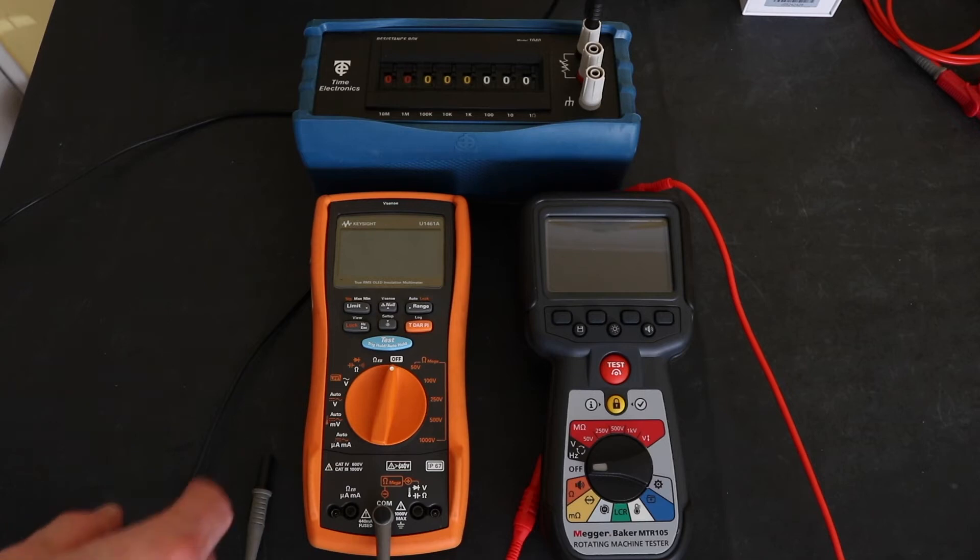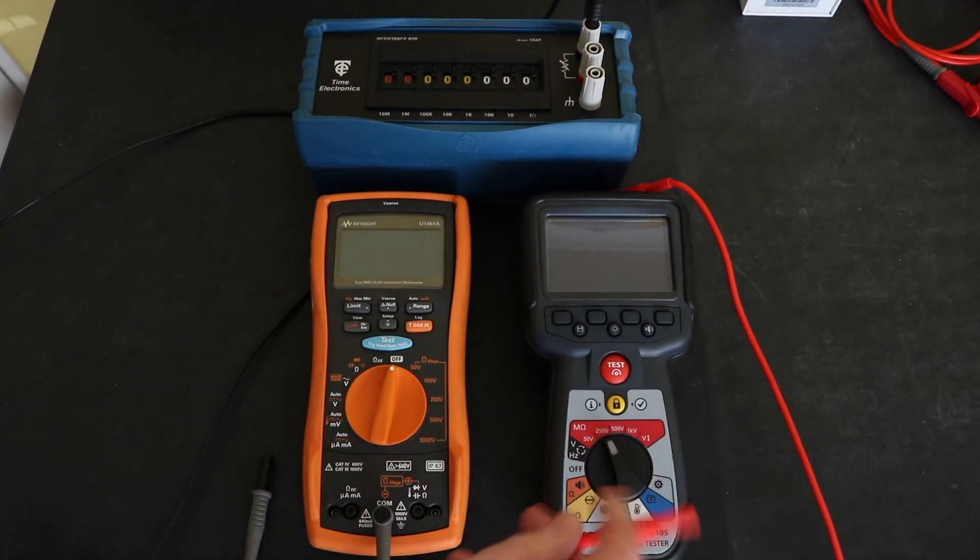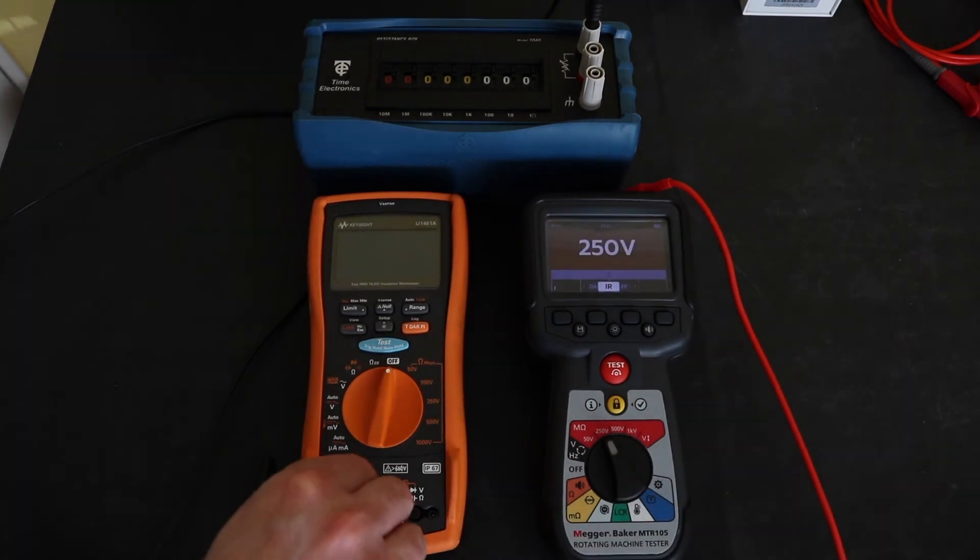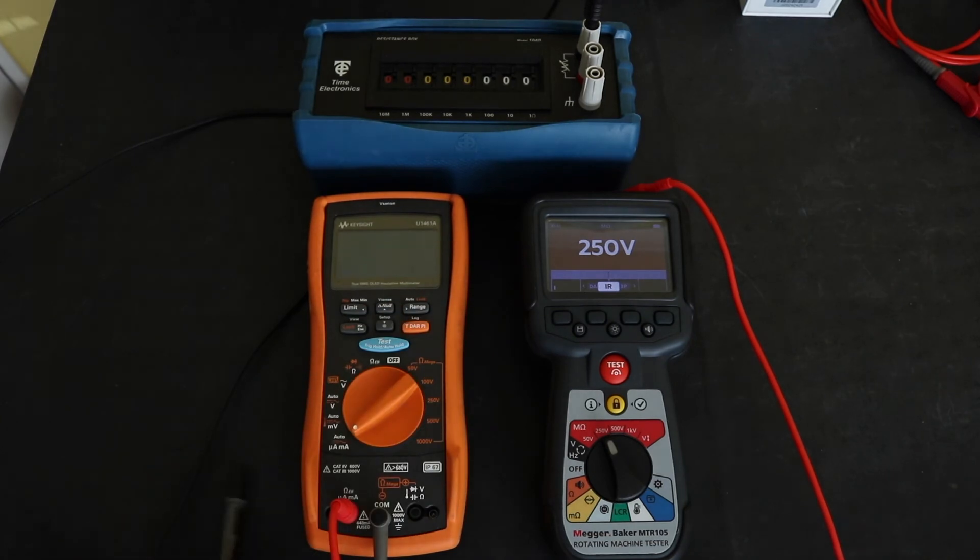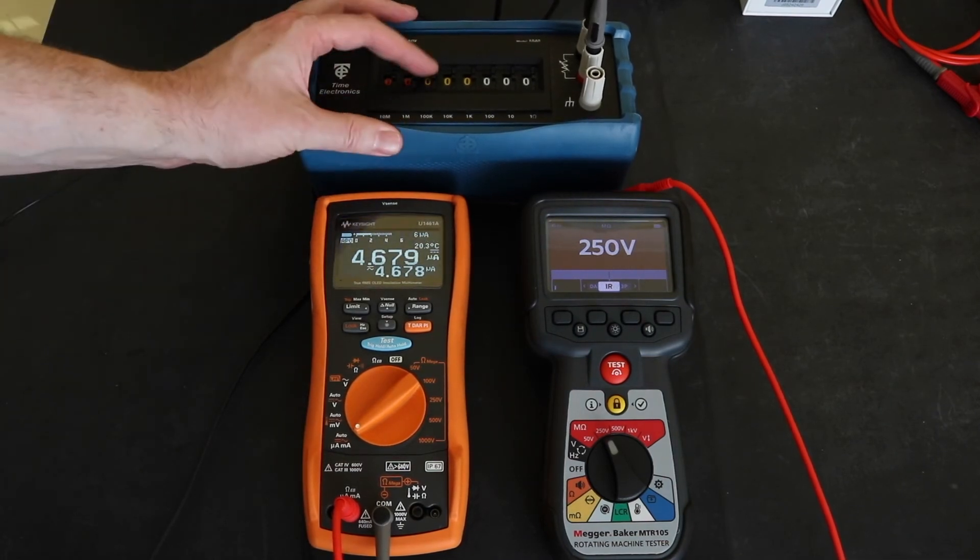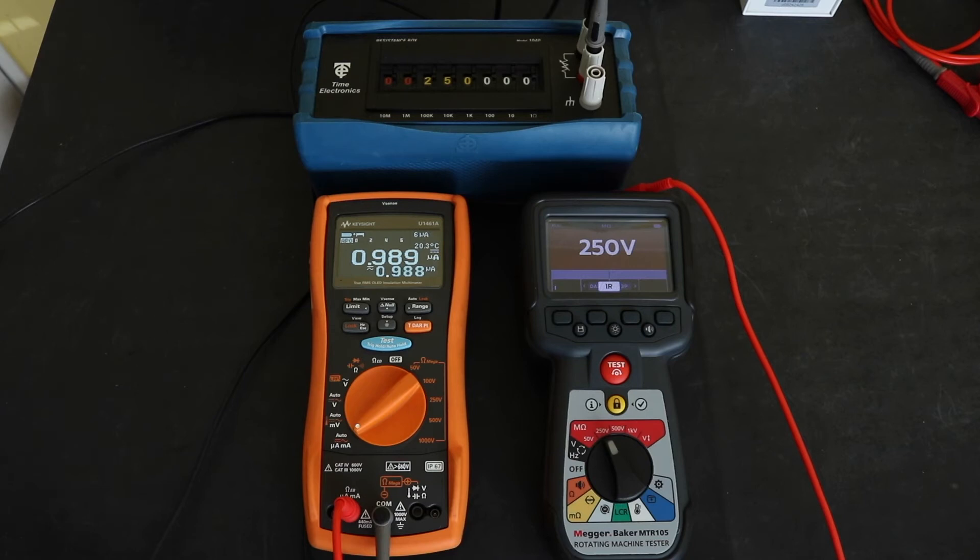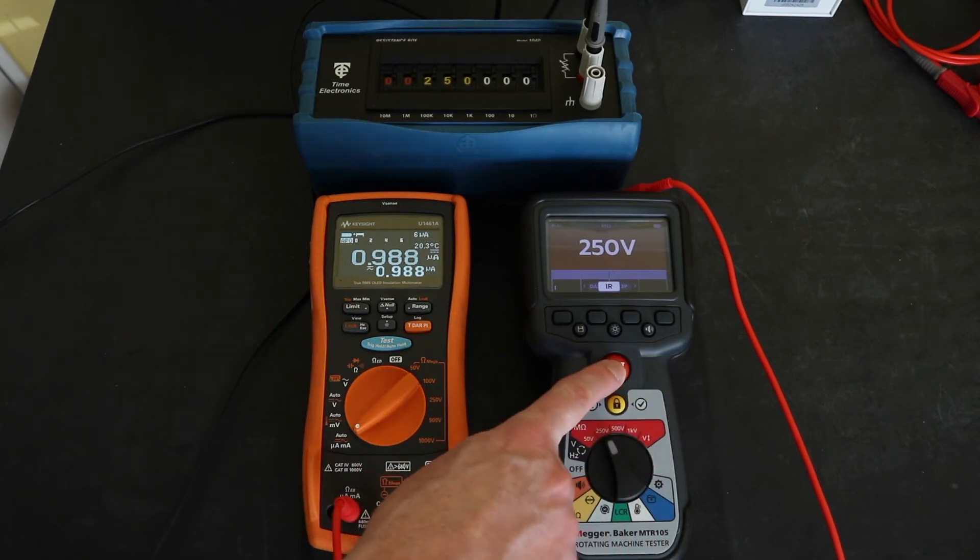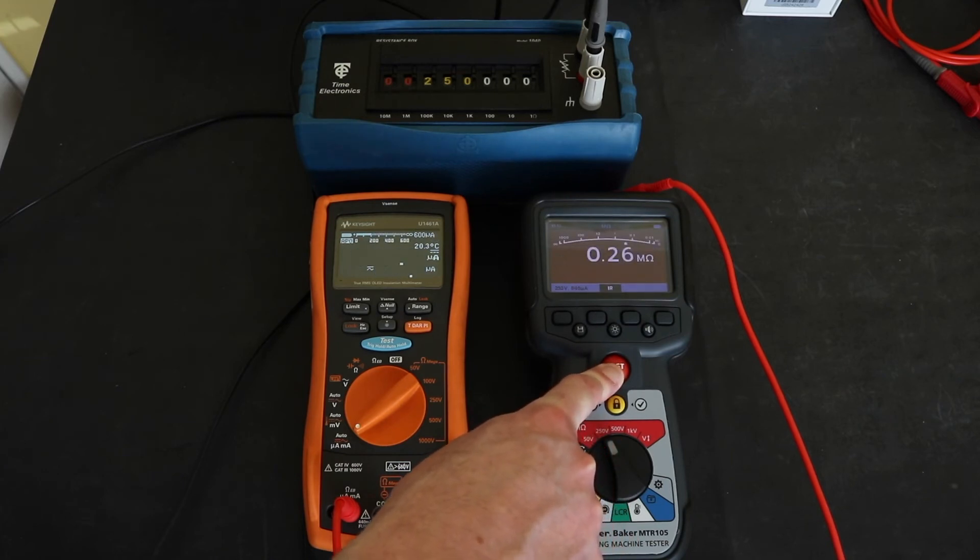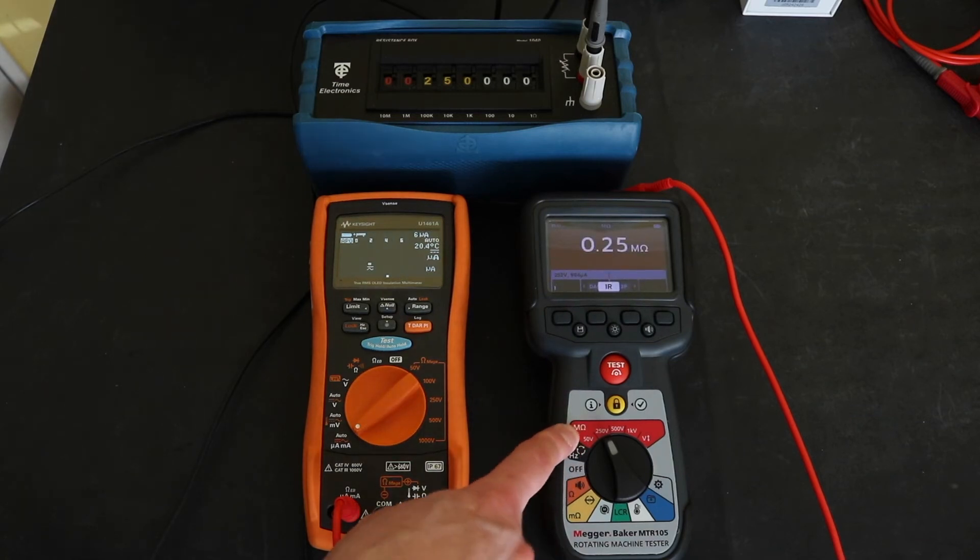So briefly, the setup to measure the one milliamp load test on an insulation tester: you have the tester set to insulation mode, I have one lead that comes out and goes to the U1461A that I'm going to use as an ammeter and then the other lead from the ammeter comes out and just goes to this resistance decade box that I will set up. So for 250 volts that's going to be set to 250 kilo ohms, set to DC, set to IR mode. So if I hit the test button you can see I've got a resistance of 0.26 mega ohms or 250 kilo ohms and there's my 1.0005 milliamps on the instrument.